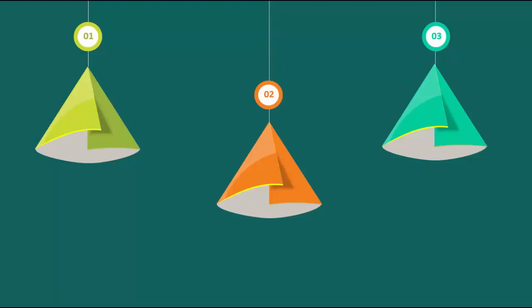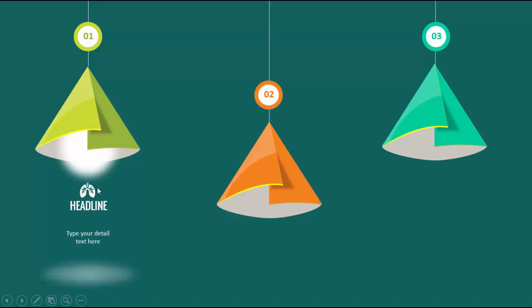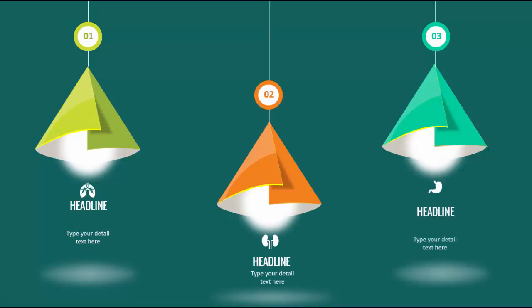Hello and welcome to my YouTube channel PowerPoint University. In this tutorial I am going to show you a very creative and very attractive lights infographic slide in PowerPoint. You can see here there are three lights: light one, light two, and light three with different and very attractive colors. When I click, the first light comes, the text and the light shadow also will appear at the bottom, and when I click it will show the details of light two and then light three.